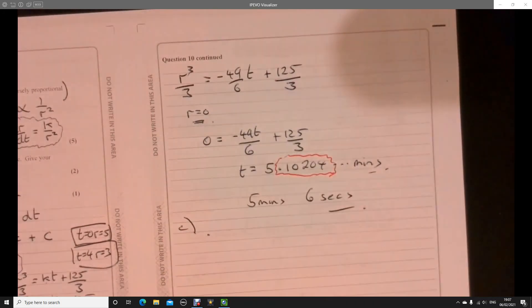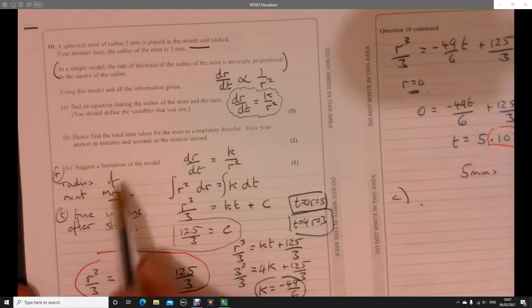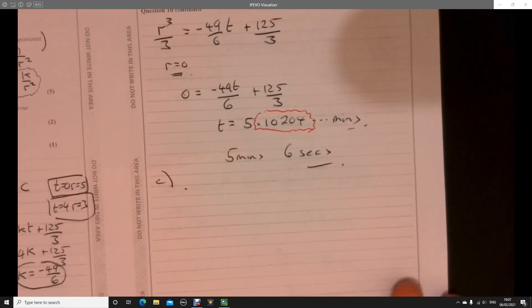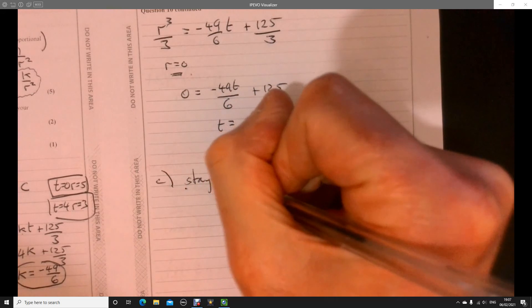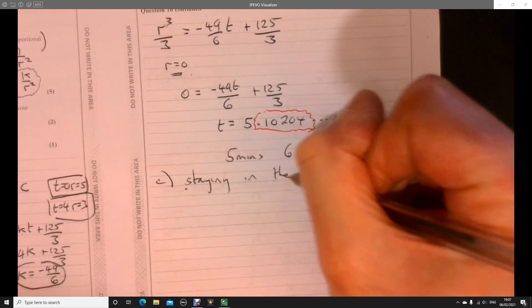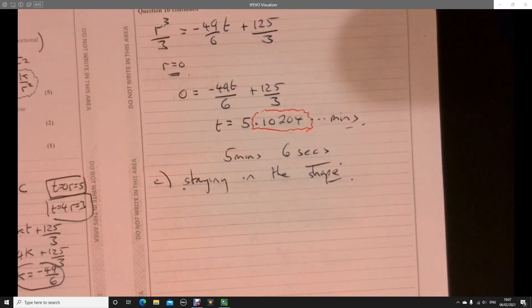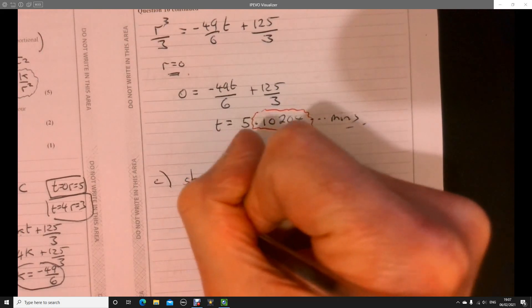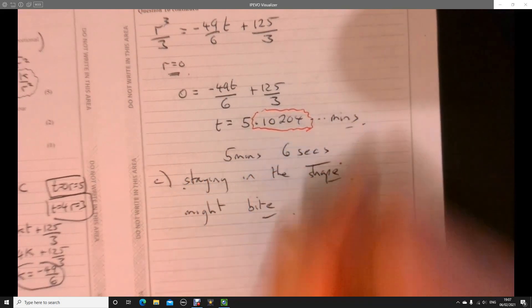There is a part C as well. And part C says, suggest a limitation of the model. Again, there's loads of things that you could say here. We could be saying, well, what about, you know, we're assuming that it's sort of staying in the same shape, i.e. spherical. I don't know about you, but I might bite it. I'm assuming it's, you know, I might bite it. I'm assuming it's not bitten.